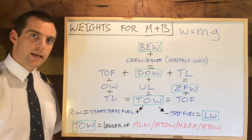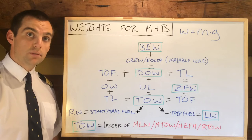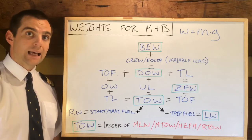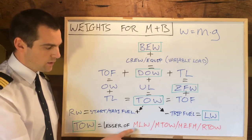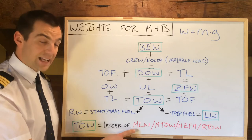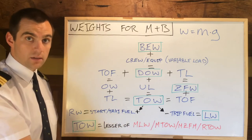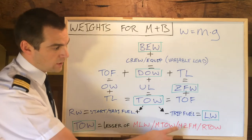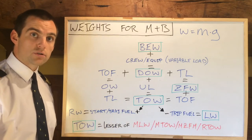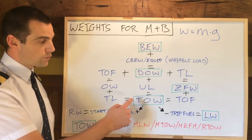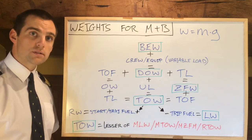The takeoff weight of the aircraft can essentially be broken down into two sections: maximum performance and maximum structural takeoff weight. Our takeoff weight has to be the lesser of the maximum landing weight, the maximum takeoff weight, or the maximum zero fuel weight — three structural constraints. The takeoff weight cannot be greater than the smallest of those three.